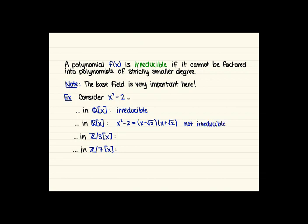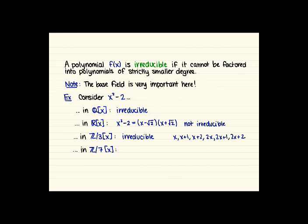In Z mod 3 adjoin x, x squared minus 2 is irreducible again — we don't have anything that squares to give us 2. We could also check that all linear factors don't divide it: x, x plus 1, x plus 2, 2x, 2x plus 1, 2x plus 2 — none of these divide x squared minus 2. In Z mod 7 adjoin x, it's reducible again since x squared minus 2 equals (x minus 3)(x plus 3), because 3 squared equals 2 in Z mod 7.